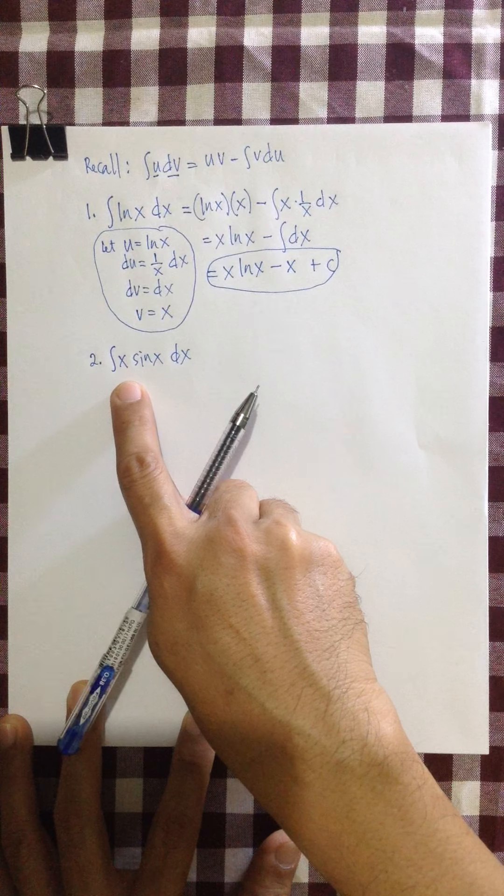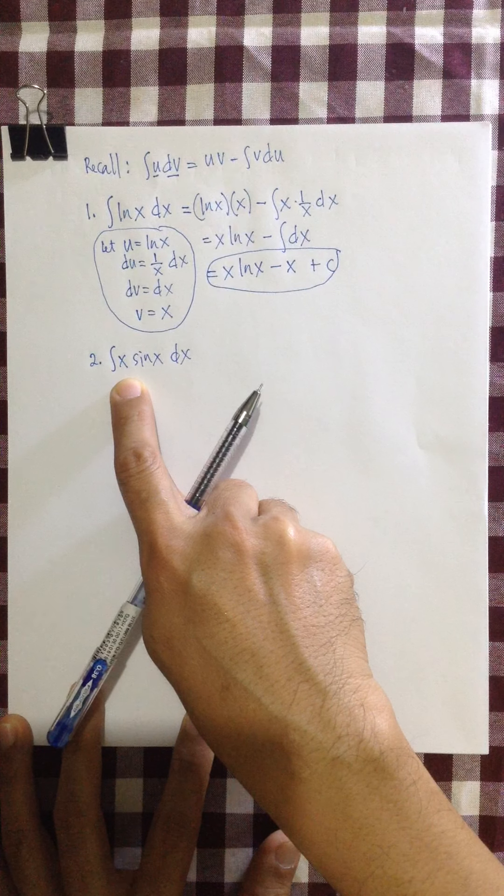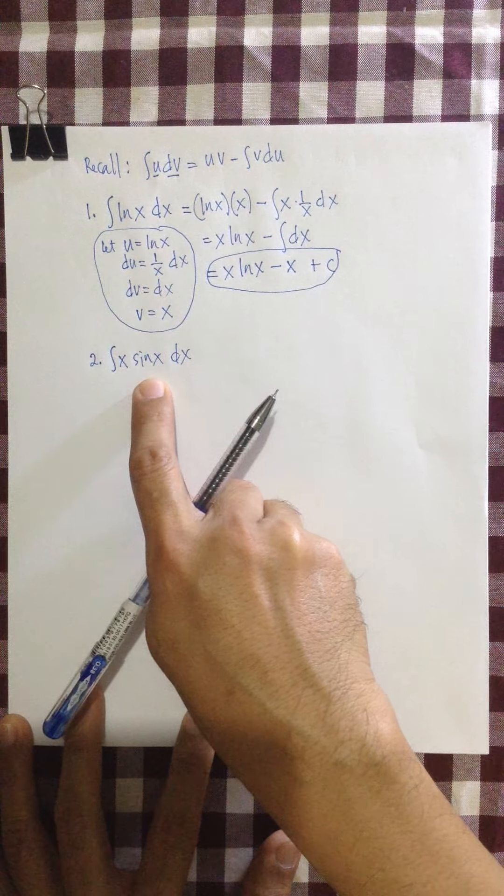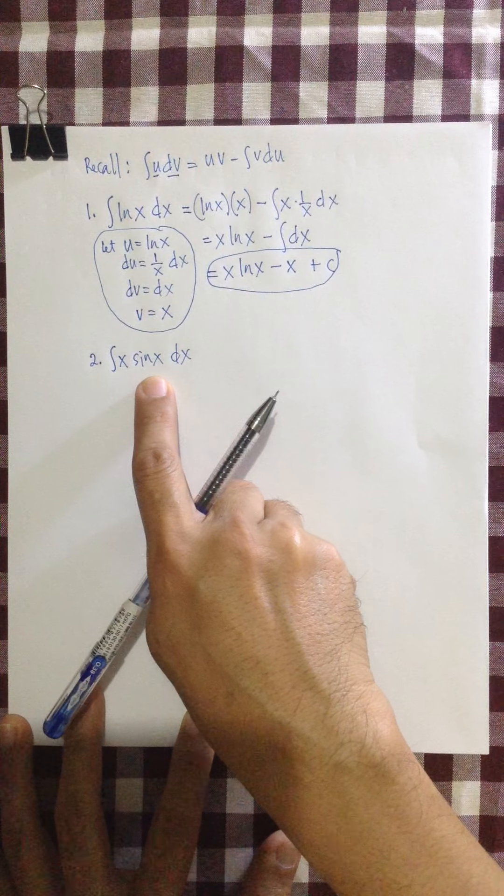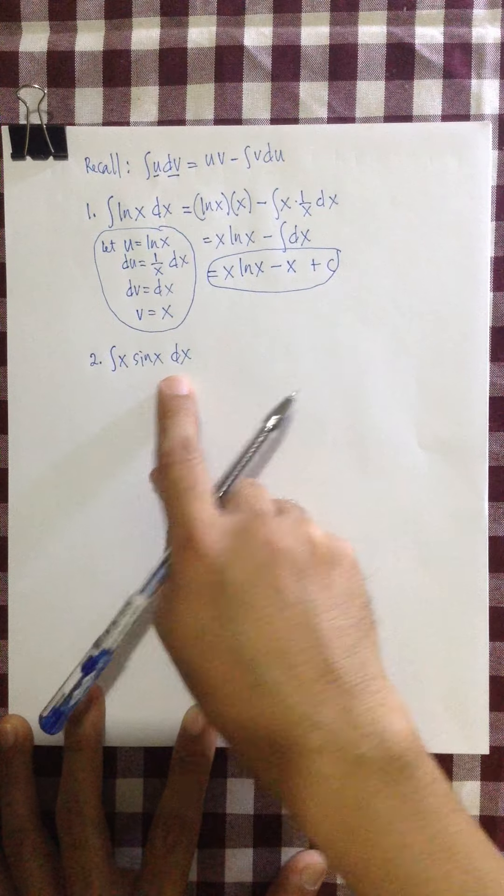Because we want, actually, this x to be reduced later, not to 1, at least, so that we are left, eventually, with sine x. Then we can easily evaluate the integral of sine x dx.